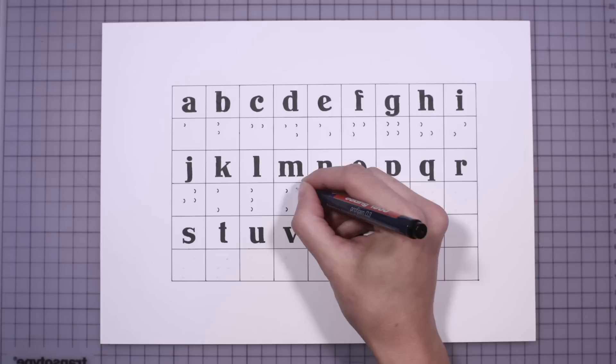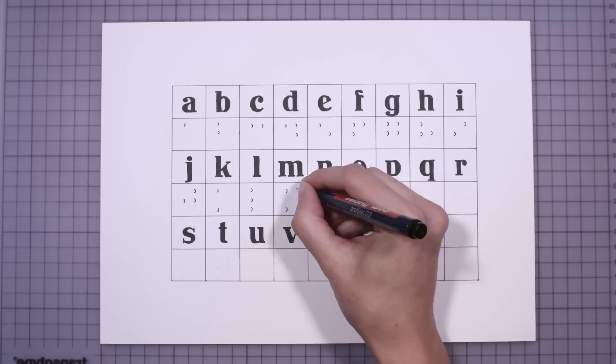The system catches on. Today, Braille is the universally accepted system of writing for the blind, adapted for more than a hundred and thirty languages.